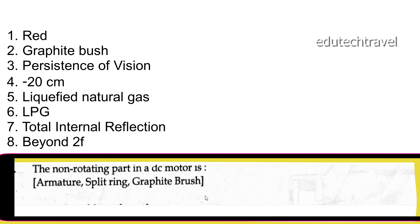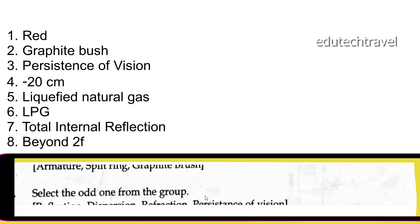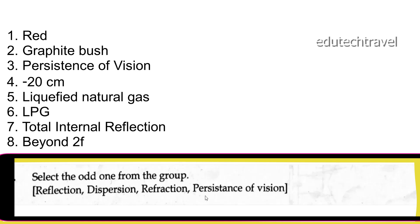Second question: the non-rotating part in a DC motor is the armature, split ring, graphite brush. In a DC motor, the graphite brush is used.